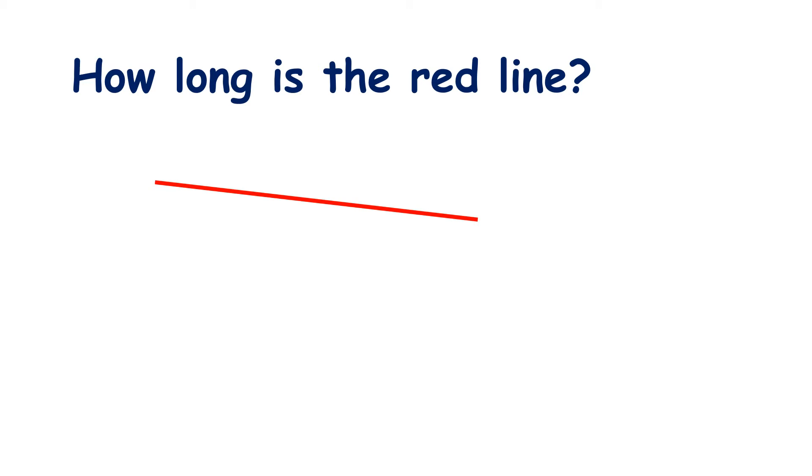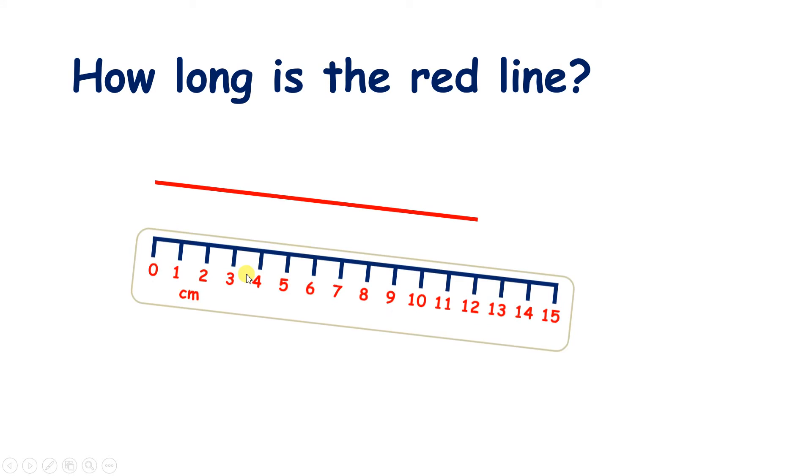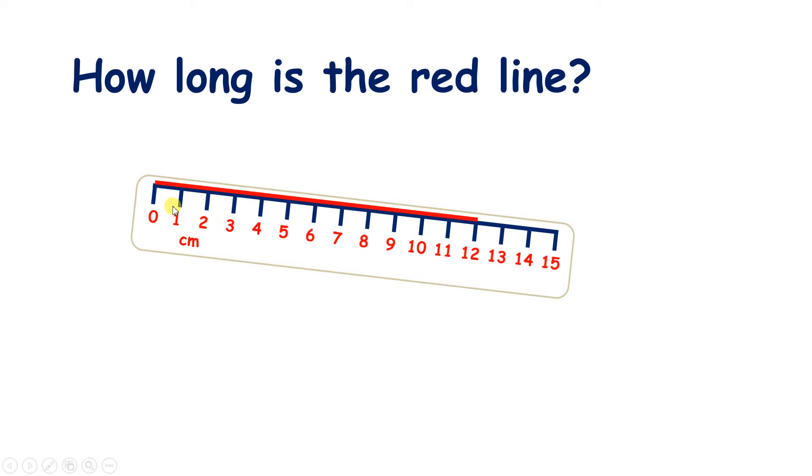So what are the two things that we need to remember when measuring lines? We need to make sure we've turned our ruler so it goes right along the line and we also need to remember that the start of the line must be at 0 centimeters on our ruler.